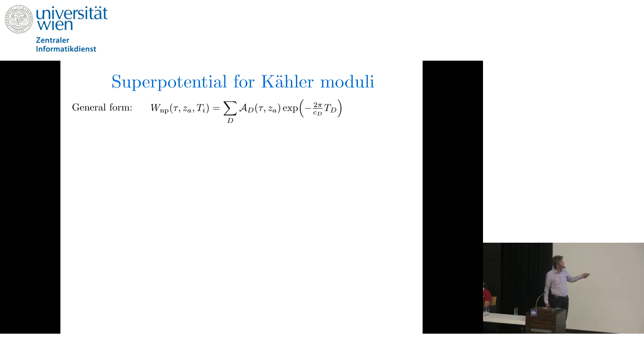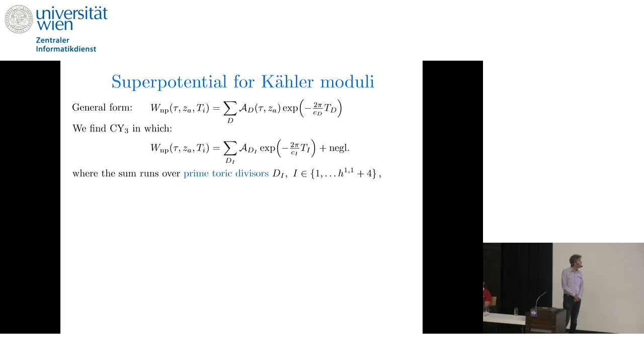So the general form of the superpotential for the Kähler moduli is the sum over effective divisors of exponentials in the complexified volumes divided by dual Coxeter numbers with Pfaffian pre-factors. The sum over all effective divisors in principle. Now, what we did is to find Calabi-Yau three-folds in which the superpotential is well approximated by a sum only over prime toric divisors. A prime toric divisor is a zero of a toric coordinate. And they're easy to understand, easy to compute. But in addition, we found cases where the prime toric divisors that do contribute have Pfaffians that are pure constants with no dependence on tau or z.